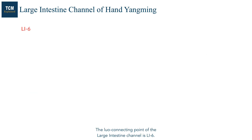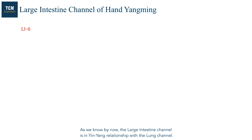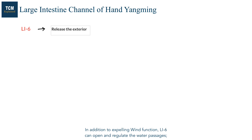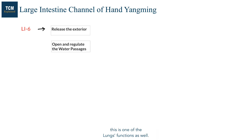The lower connecting point of the large intestine channel is LI6. The large intestine lower connecting channel connects with the lung channel. The large intestine channel is in a Yin-Yang relationship with the lung channel, which is why points on the large intestine channel can release the exterior — one of the actions of the lungs. In addition to expelling wind, LI6 can open and regulate the water passages, which is also a lung function.